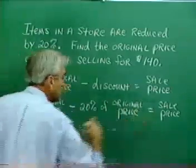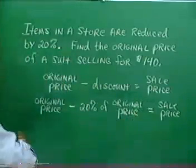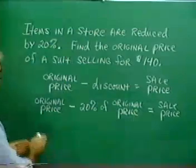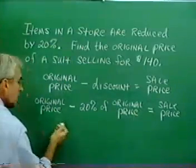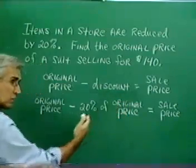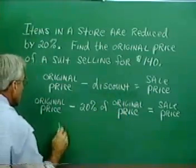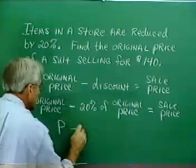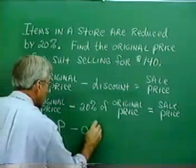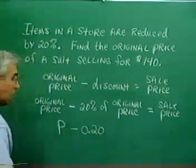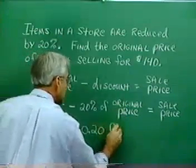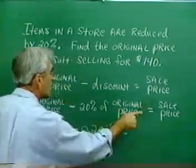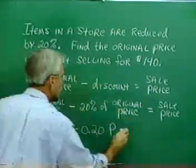So now we're ready to build our equation. We would say something like let P equal the original price. Let's let P stand for that. Now, we're going to subtract 20%, and we know that we represent that as a decimal. Of means times the original price we said was P, and then that's equal to the sale price, but we're told that the sale price is $140.